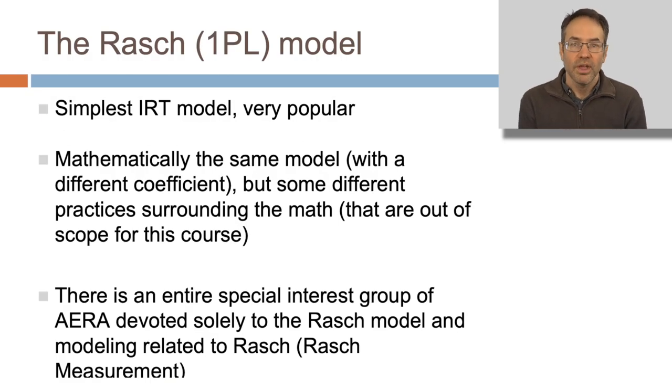So let's start with the Rasch model. It's the simplest IRT model and very popular. Rasch is mathematically the same model with a different coefficient as another model called 1PL, but there are some different practices surrounding the math. As it turns out, there's an entire special interest group of the American Educational Research Association devoted solely to the Rasch model. If you go to that special interest group and say Rasch and 1PL are the same thing, you might get laughed out of the room.